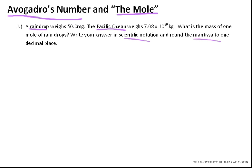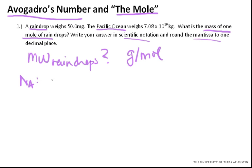So we need to find what is the mass of one mole. This is basically asking us what is the molecular weight of raindrops. Because molecular weight is determined, the units of that is grams per mole. And remember that Avogadro's number is 6.022 times 10 to the 23. In this case, we'll say drops in a mole. And so let's get started.